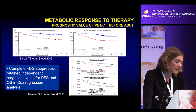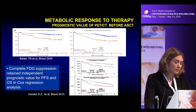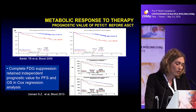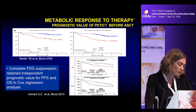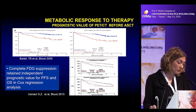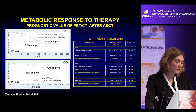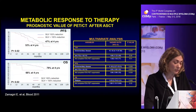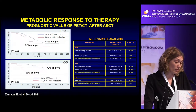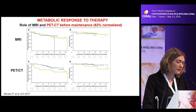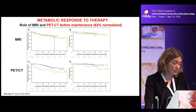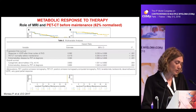The first demonstration was almost ten years ago from the Little Rock group, who showed that patients achieving negativization of focal lesions at PET-CT before autologous stem cell transplantation had significantly improved progression-free and overall survival. This was confirmed in an independent Italian series of newly diagnosed transplant-eligible patients receiving novel agents and double autologous stem cell transplantation, and again in a third independent series, where PET-CT negativization before maintenance was independently prognostic for progression-free and overall survival.